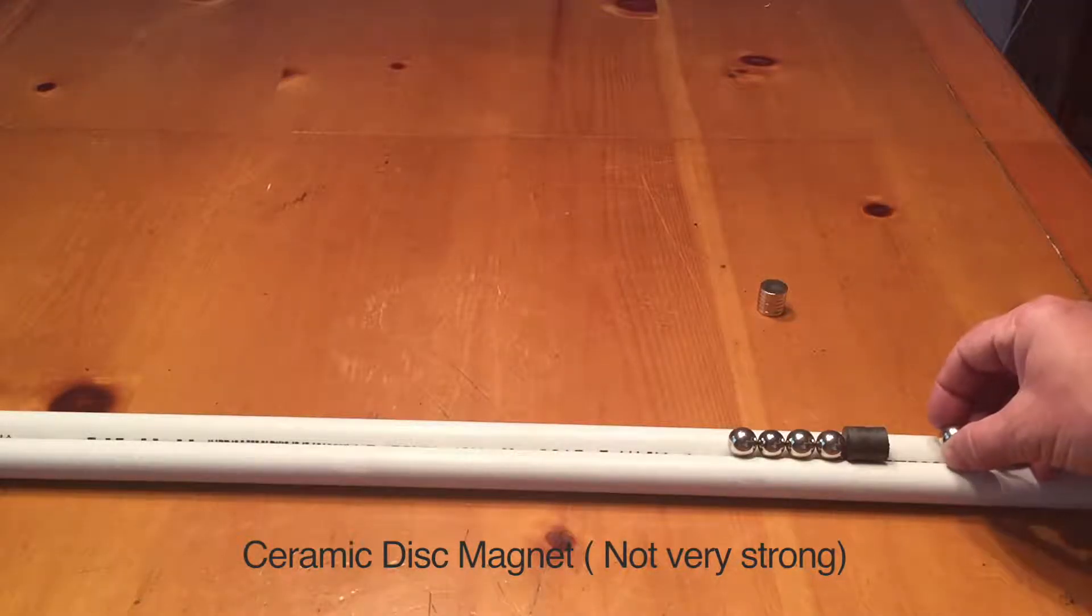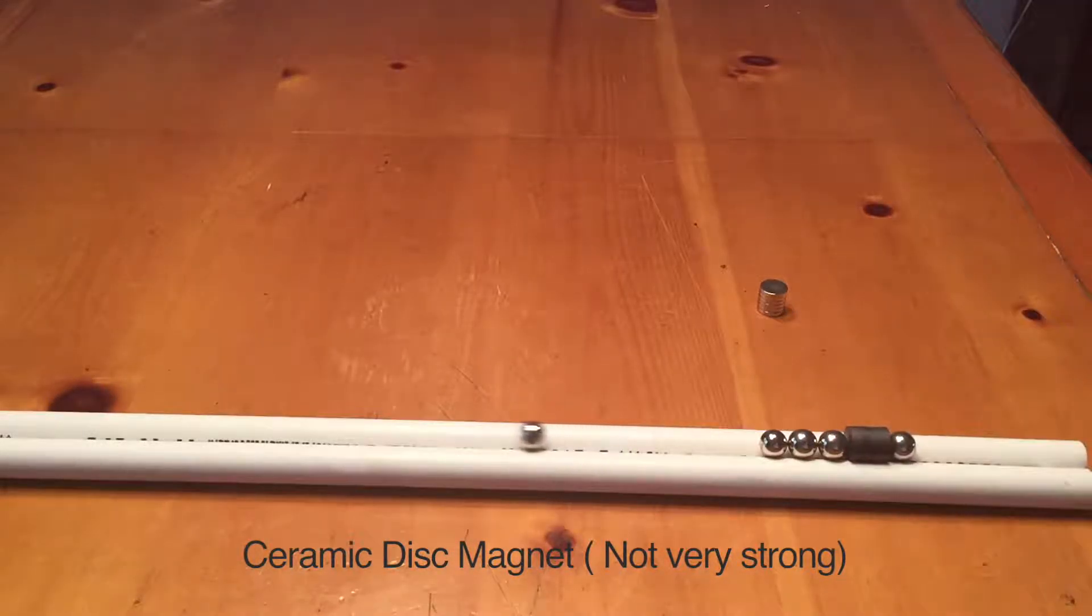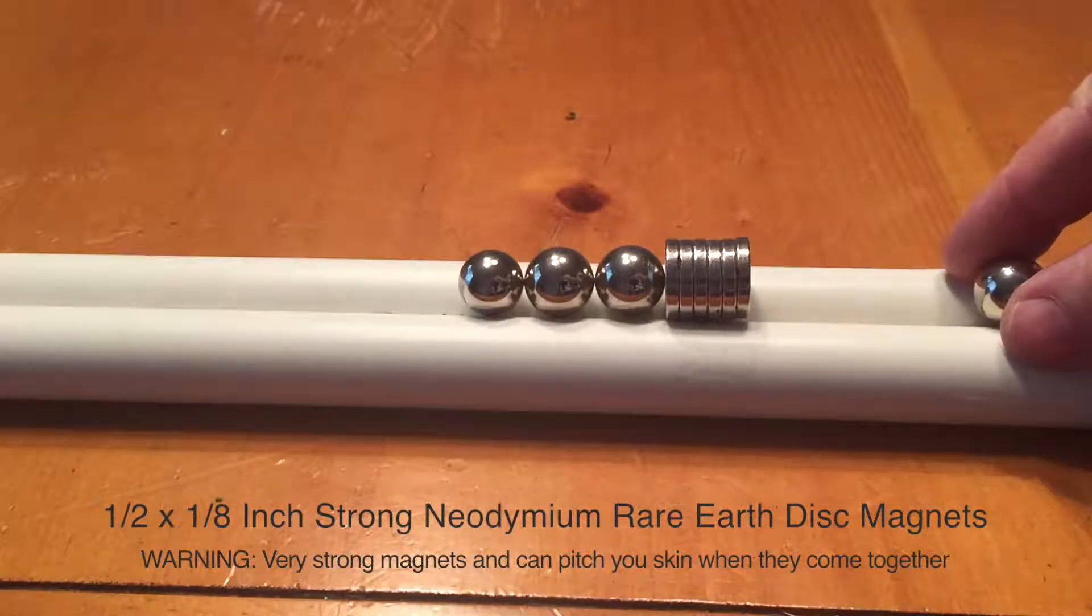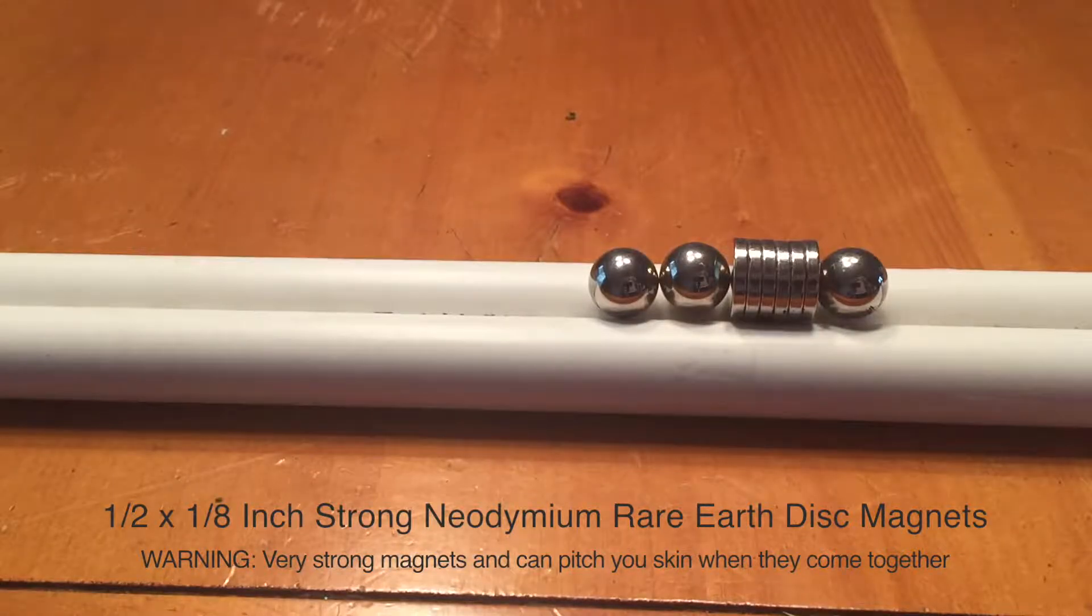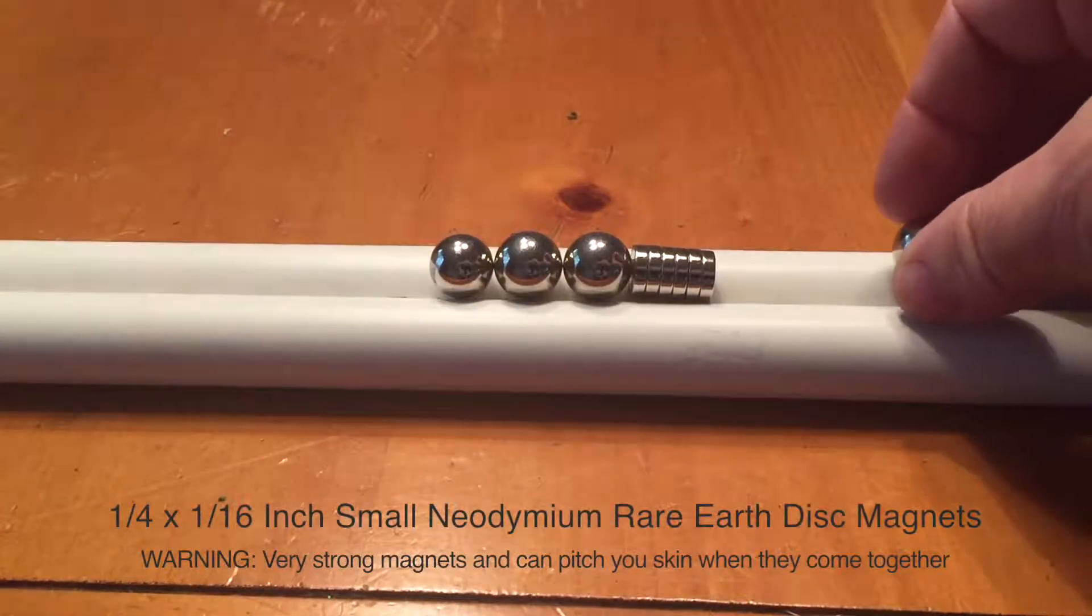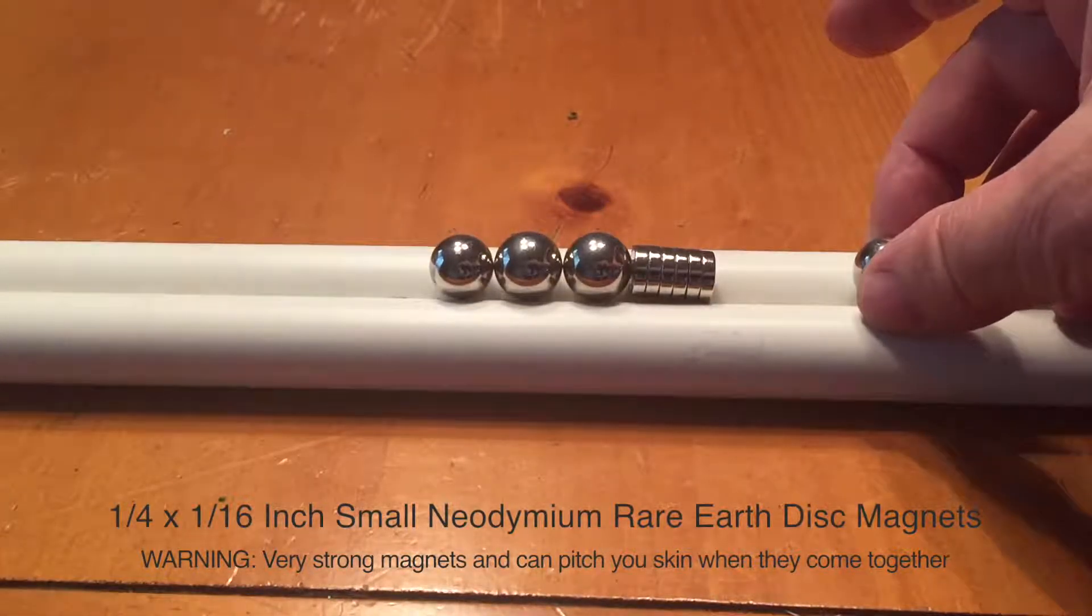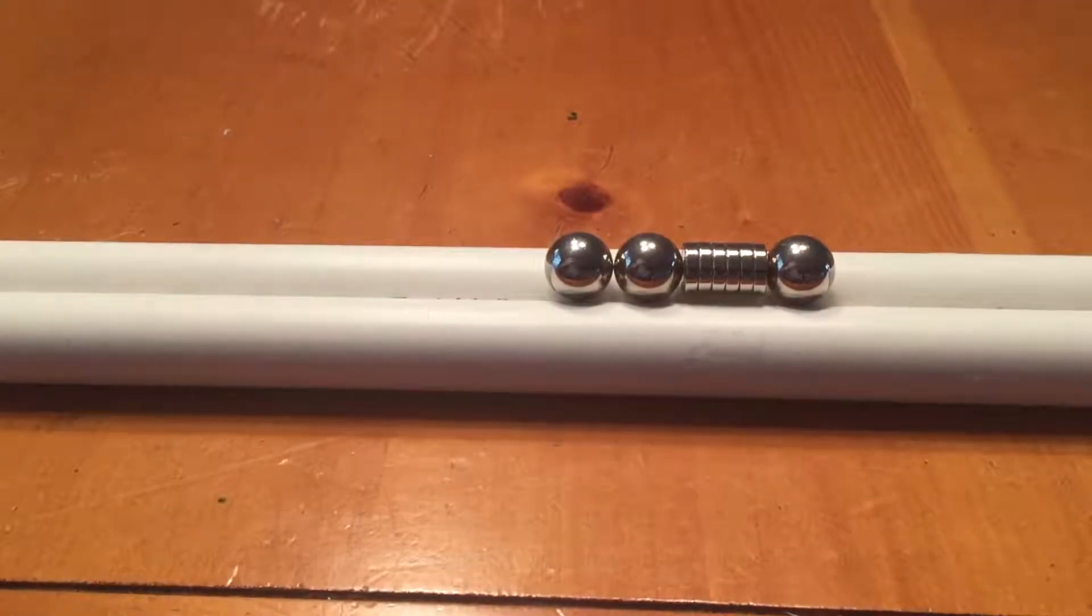The setup is very simple. I just took two PVC pipes and put them together with scotch tape. Then you put your strong magnets behind the steel balls and just place the ball down in front. You can see it just shoots out just like that.